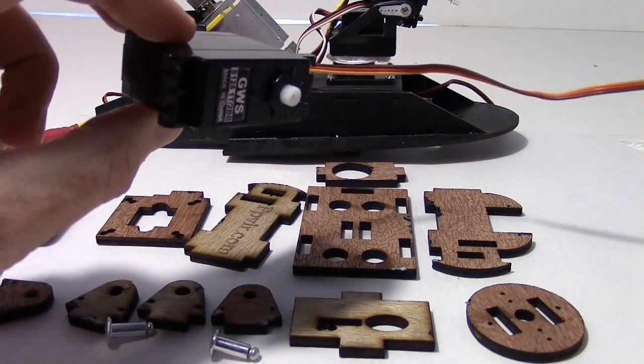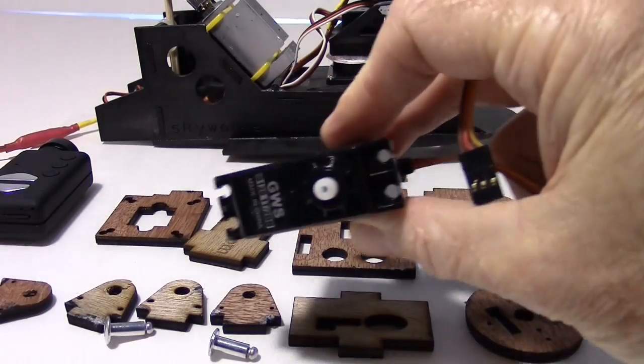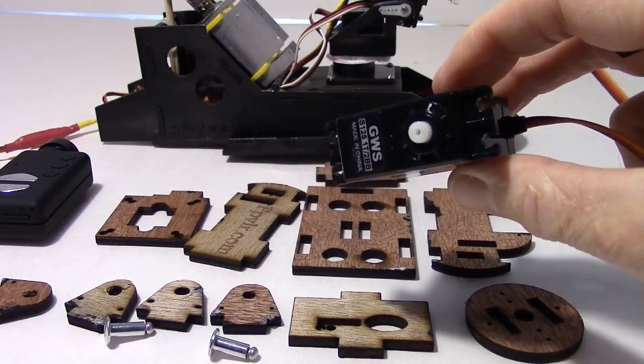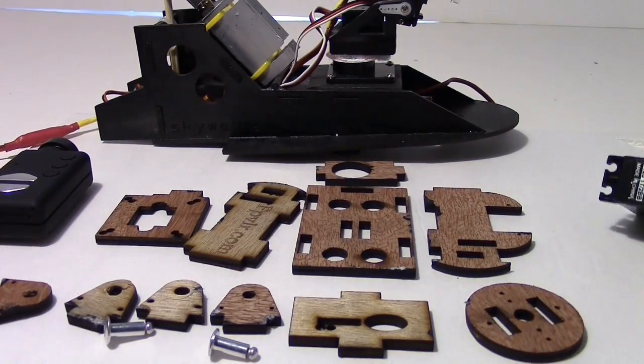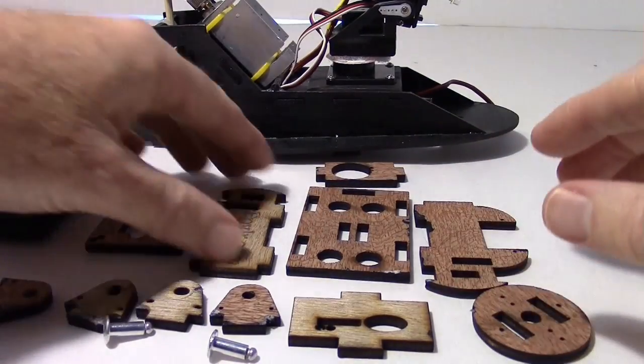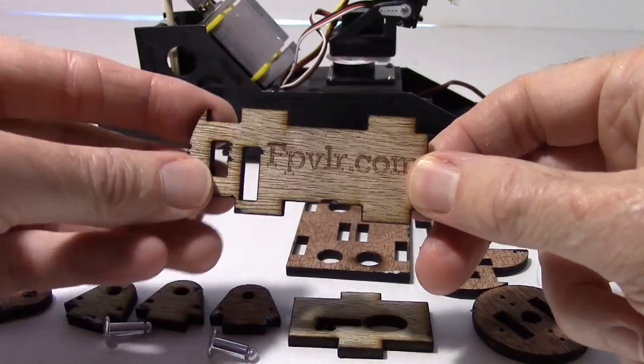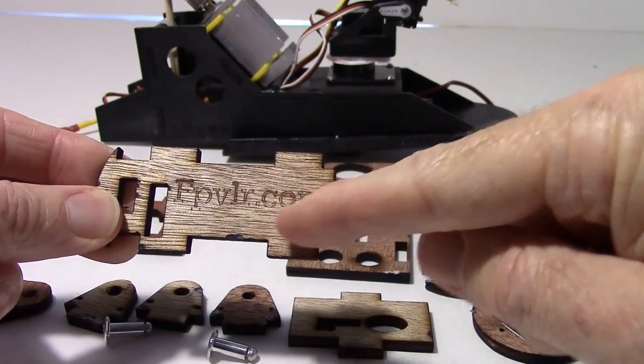It's a servo that's used for sail winches. And what I'm going to be doing here is using this servo to make a 360 degree Mobius pan tilt. And the pan tilt I'm going to be using is made out of this plywood here. And it came from this company right here, FPVLR.com.